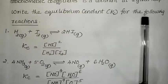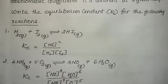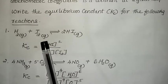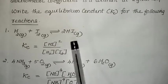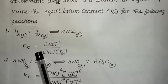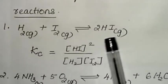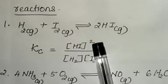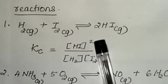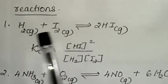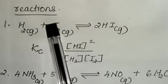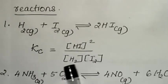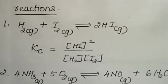We can write equilibrium constant Kc for some reactions. First example: H₂ gas plus I₂ gas reversibly gives 2HI gas. Then Kc = [HI]² / [H₂][I₂]. The stoichiometric coefficient 2 of HI is written as the power, and stoichiometric coefficients of H₂ and I₂ are each 1.